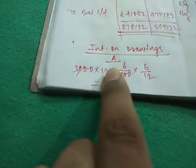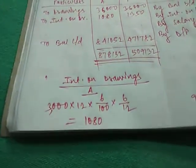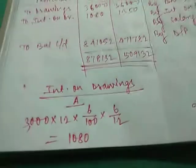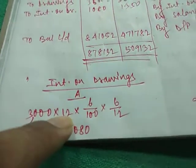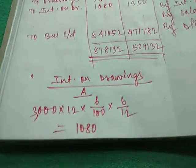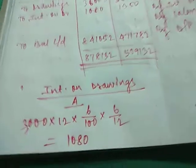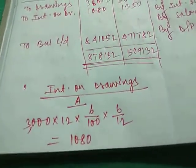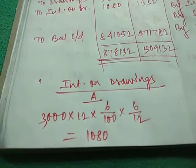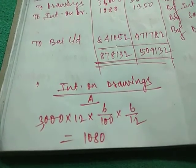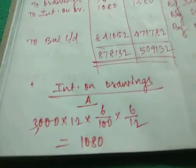Interest on drawings is for A, 3000 at the mid of every month. What was given in the question was 3000 at the mid of every month. So 3000 at the mid of every month, there are 12 months in a year. So first of all we will multiply it with 12. So 3000 into 12. Next is the rate of interest on drawings was 6% per annum. So it is 6 by 100. Since it was mid of every month, so the mid is 6 by 12.